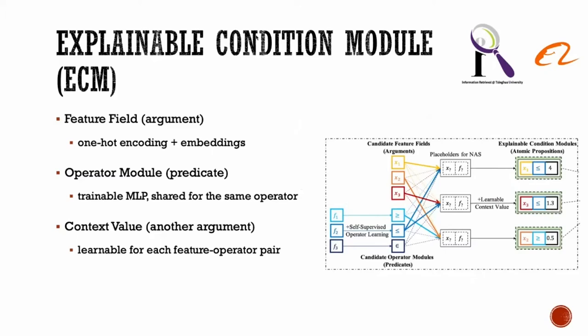Explainable condition module (ECM) is designed as the building bricks for expressing rules, which comprises a feature field as an argument, an operator module as a predicate, and a learnable context value as another argument. For numeric features, we transform values into discrete buckets and ensure larger values are discretized into buckets with larger indexes. Each position in the one-hot encoding corresponds to a feature embedding vector. Operator modules are implemented by neural networks. The same type of operator module are shared among different ECMs, and self-supervised learning strategy is used to ensure operator modules have suitable mathematical properties. To become more flexible and possess better expressiveness, the context values in ECMs are designed as learnable parameters.